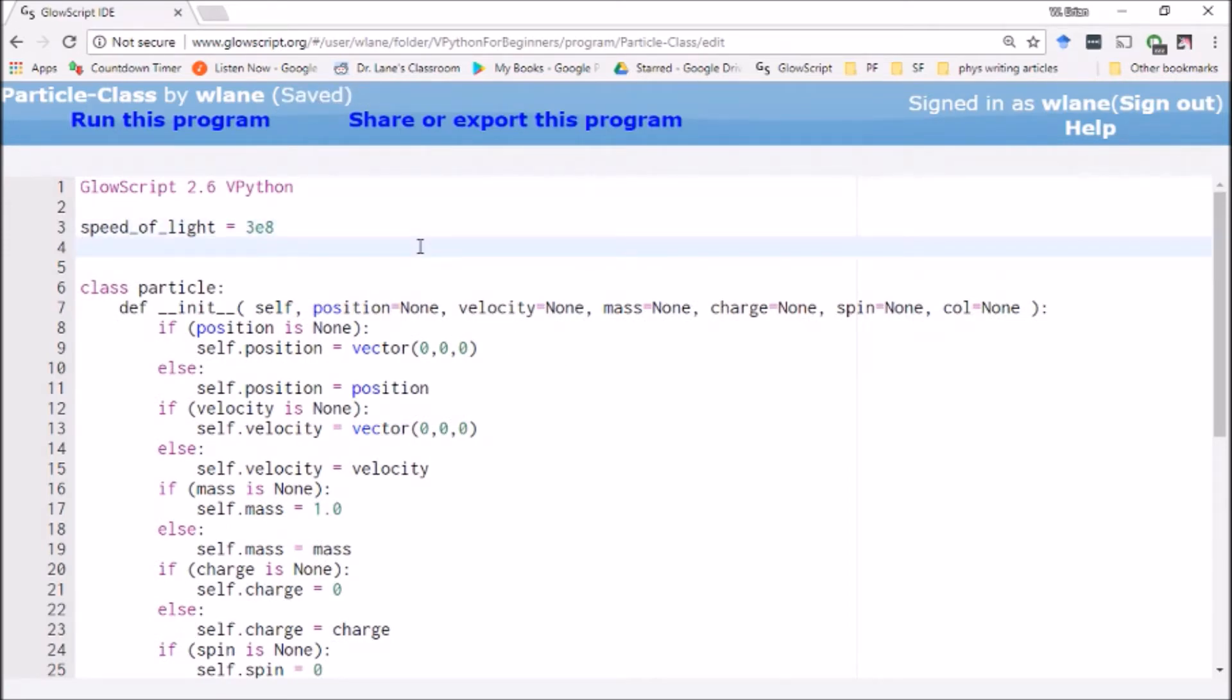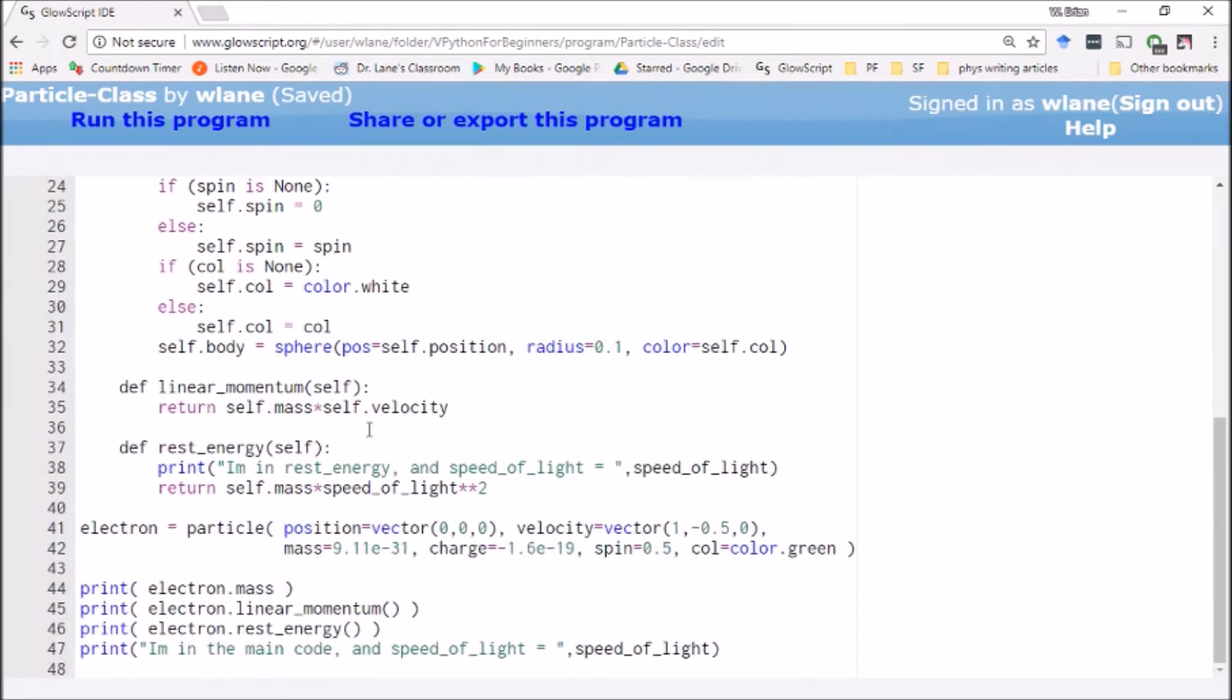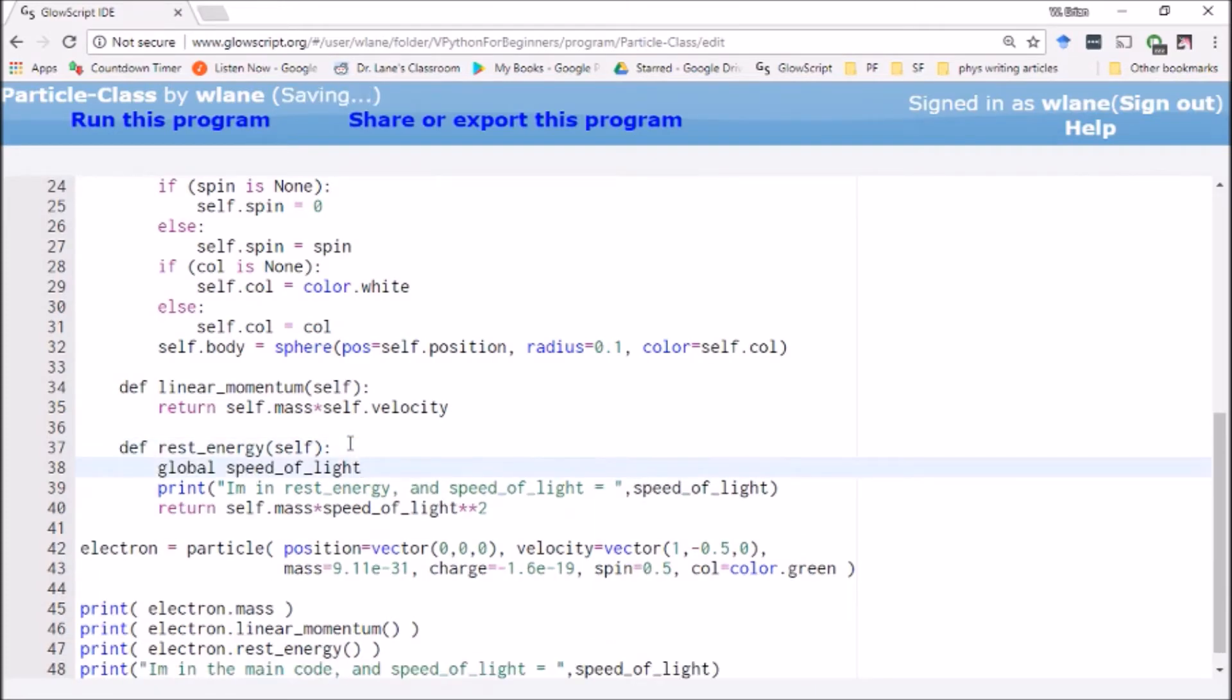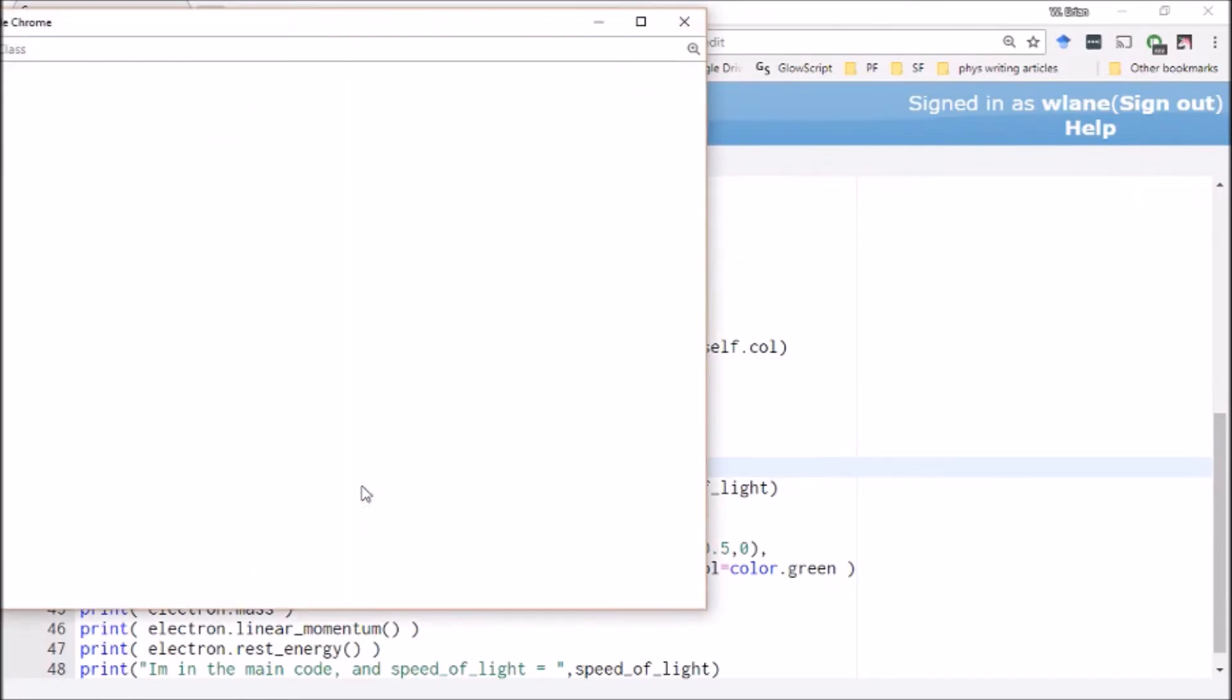Now that's only half the story because I now have to tell the code I want to make this a global variable. Global means I want this thing called speed of light to have the same value, no matter where I call it, no matter what I do with it, no matter where I am, I want it to have the same value. So I take this global speed of light here, scroll down and here in rest energy, I'm going to put in global speed of light. So now it's going to look back at the global list of variables that I started way up top. It's going to look for speed of light and it's going to recognize what that value is. Let's see what happens here. Control two.